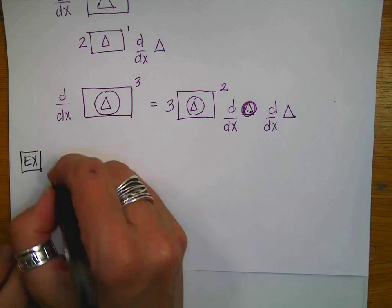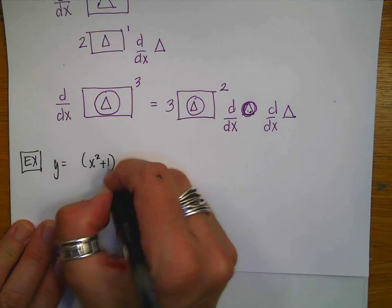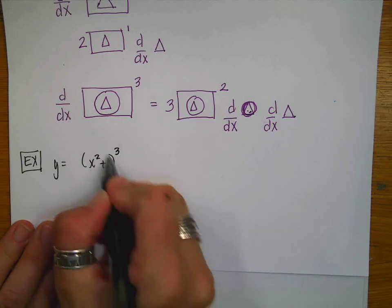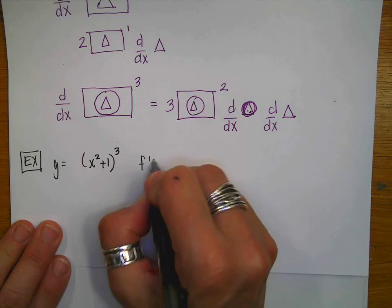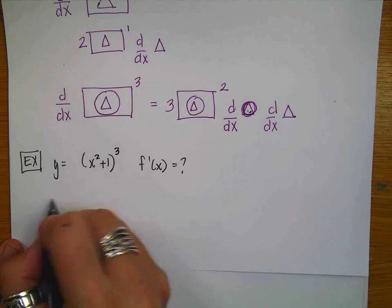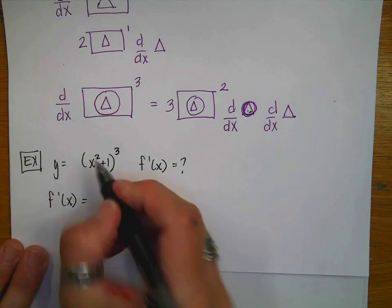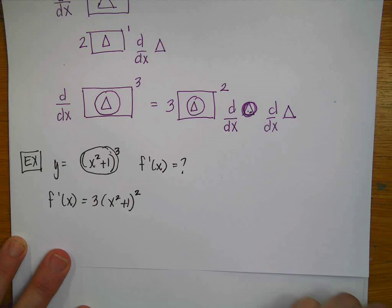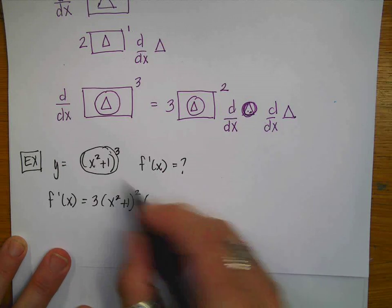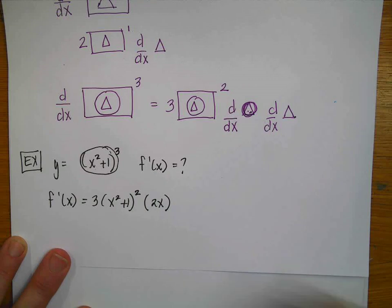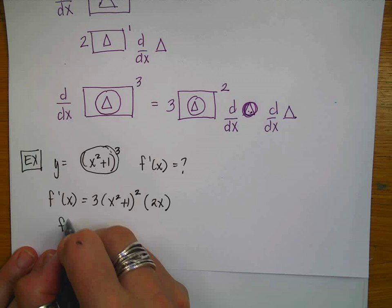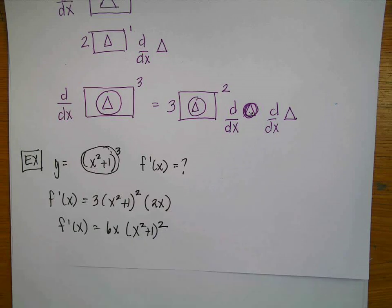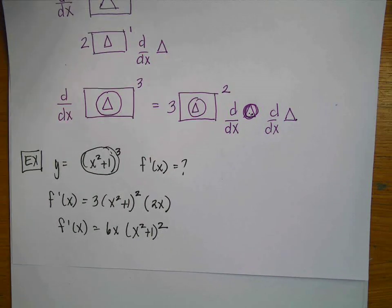Let's start with our first example. y equals x squared plus 1 to the third. You'll notice it looks a little different because now the inside of the function has stuff going on. So f prime of x: I manage the whole thing first, so it's 3 times x squared plus 1 to the second, and then I take the derivative of the inside — the derivative of x squared plus 1 is 2x. Cleaning that up: f prime of x equals 6x times x squared plus 1 squared. I would stop there and not simplify further.